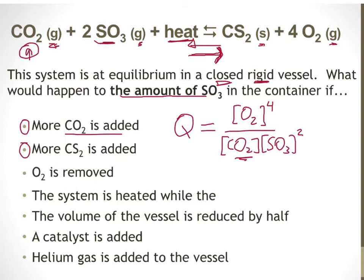The second potential stress is adding CS₂. CS₂ is a solid substance, so it does not appear in the expression for Q because its concentration is constant. Adding more CS₂ has no effect on equilibrium. From a kinetics perspective, CS₂ is a reactant in the reverse reaction but it's a solid, so its concentration is constant — adding more does nothing to either reaction rate.